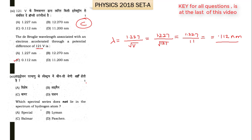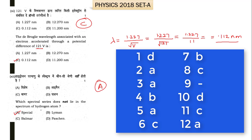The twelfth part asks: which spectral series does not lie in the spectrum of the hydrogen atom? The Lyman series, Paschen series, and Balmer series are all present in hydrogen's spectrum. The only option not belonging to hydrogen's spectrum is the special/Pfund series. So A is the right option, solving all 1-mark questions of Set A.